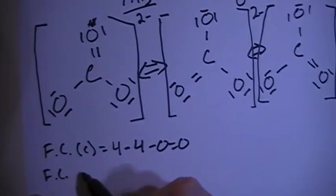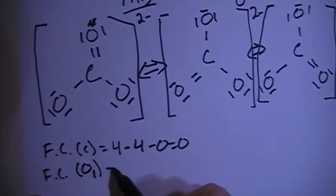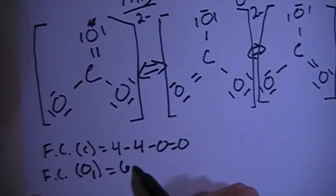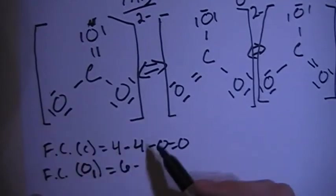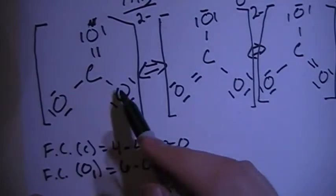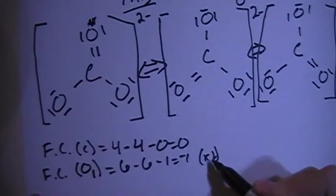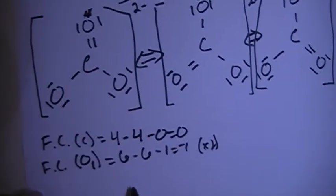The formal charge, we can do this of the oxygens that have a single bond, so O sub one. There's six valence brought in, minus two, four, six non-bonding electrons, minus one bond on each of those, gives us a minus one. But remember that's times two, because there's two oxygens with single bonds.